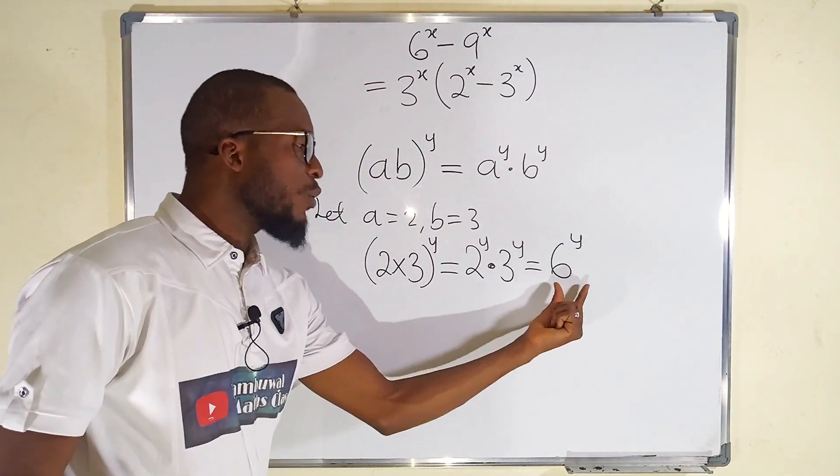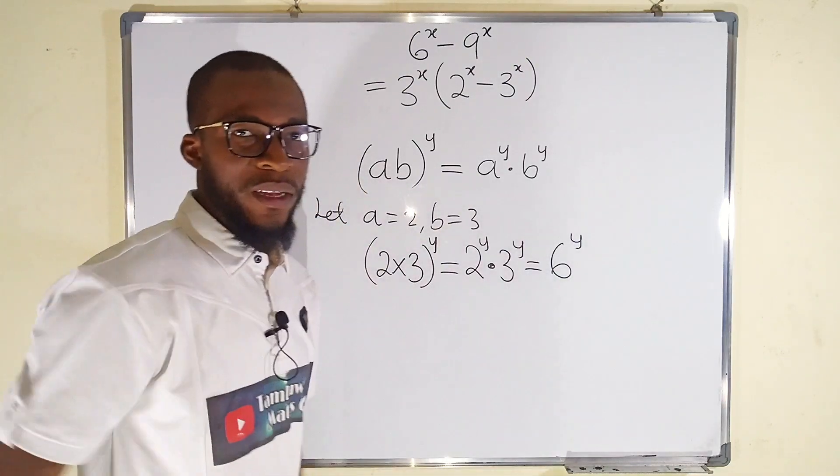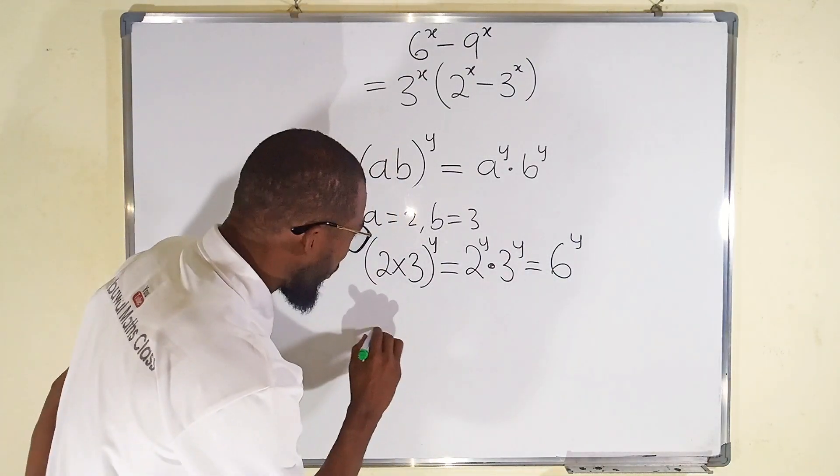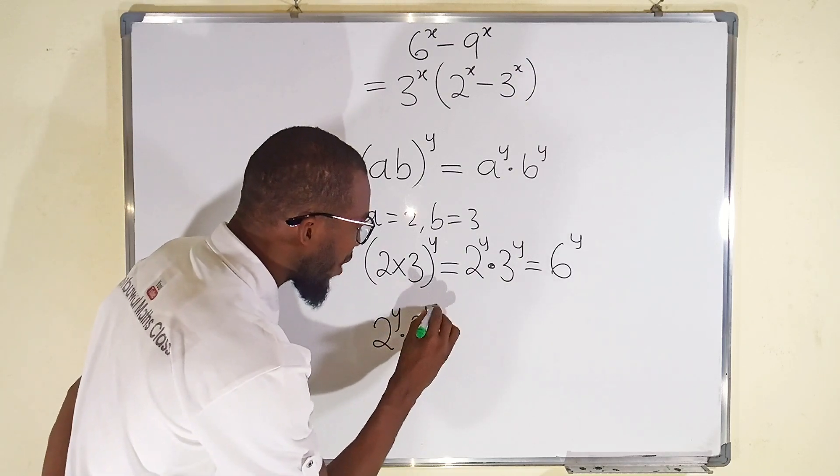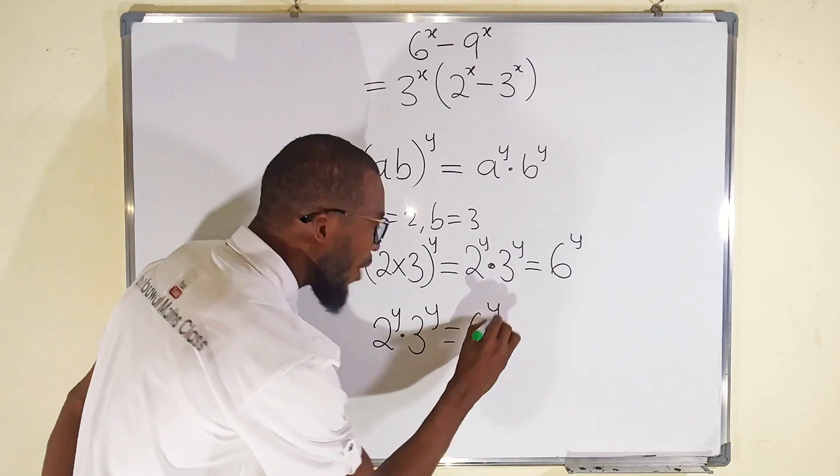Likewise, this is also equal to that, and hence these two are also the same. Can you see that 2^y multiplied by 3^y is equal to 6^y?